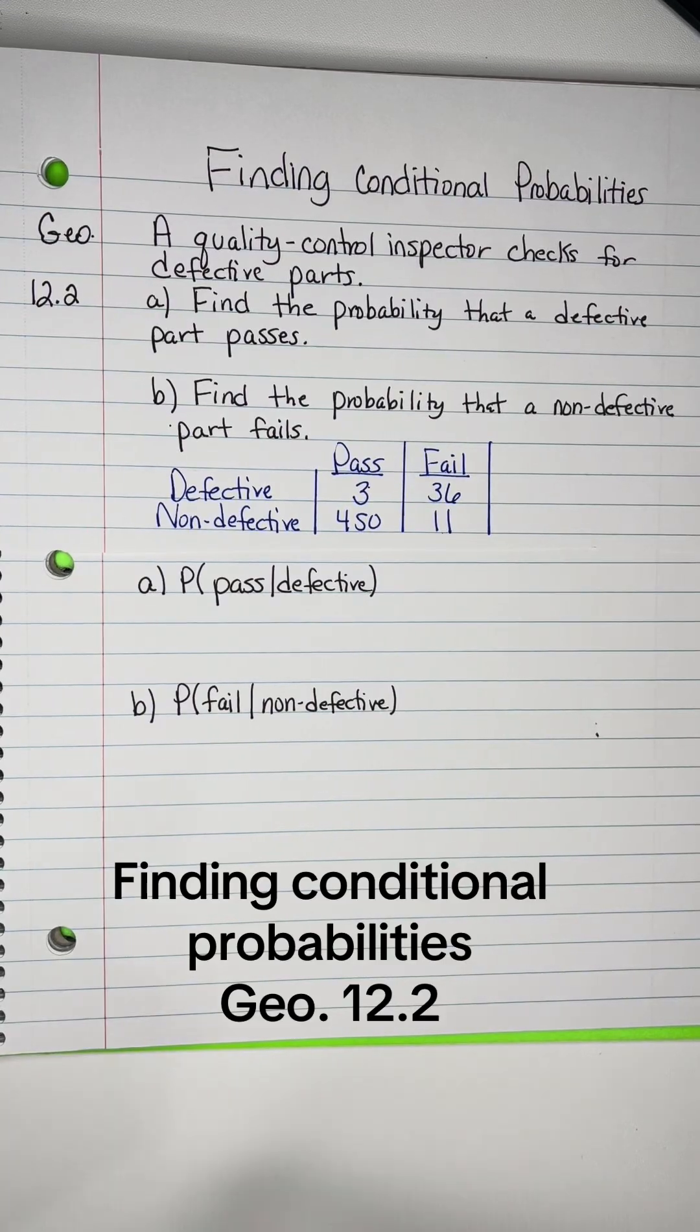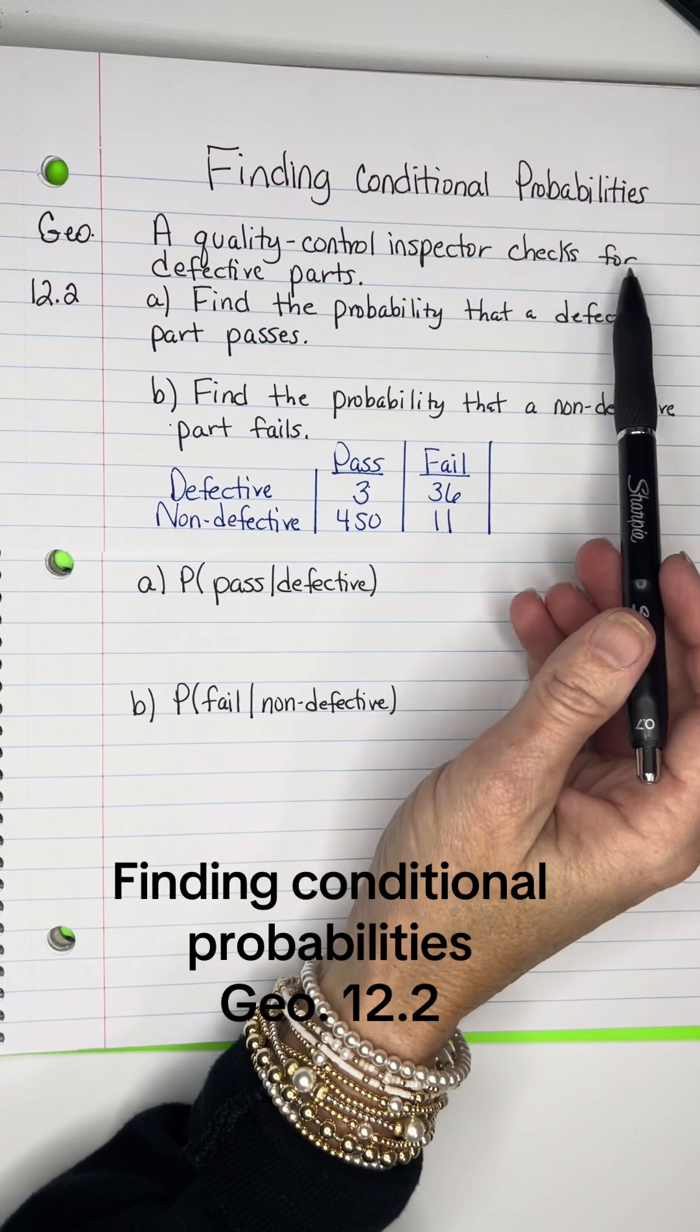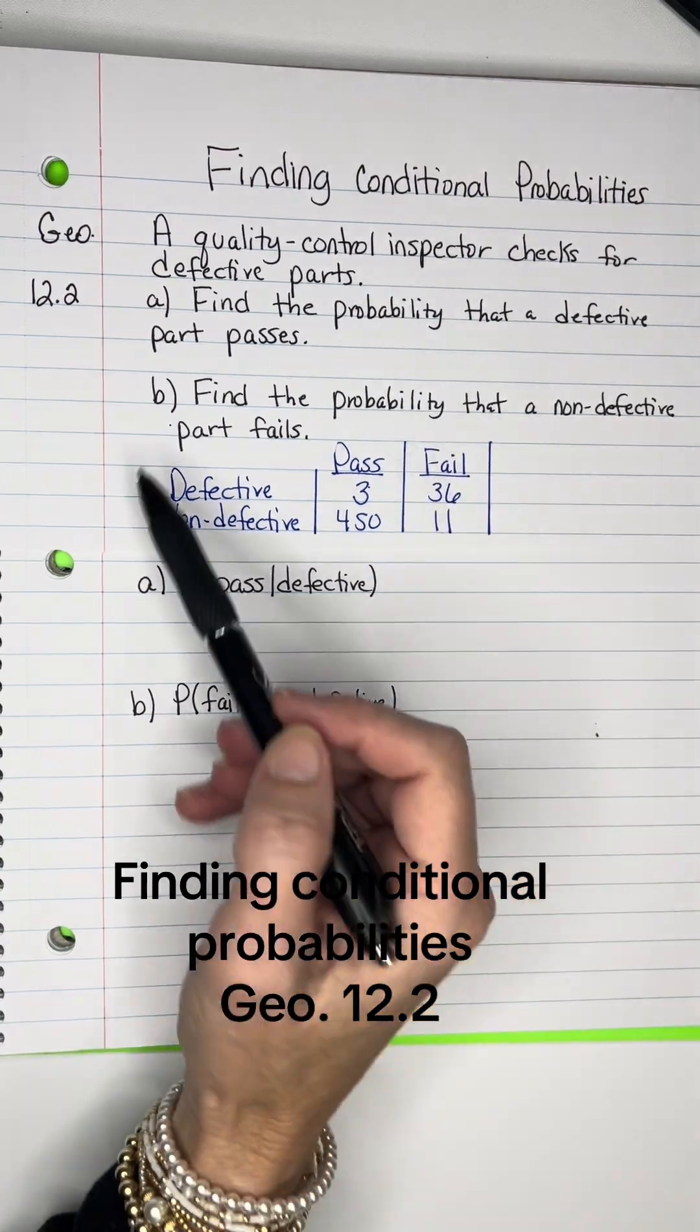We're going to find conditional probabilities. A quality control inspector checks for defective parts. Here's the table.